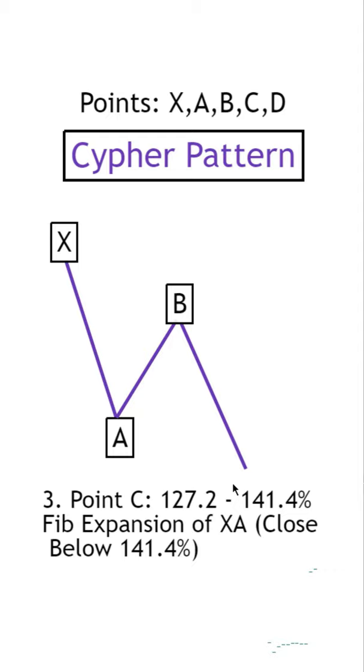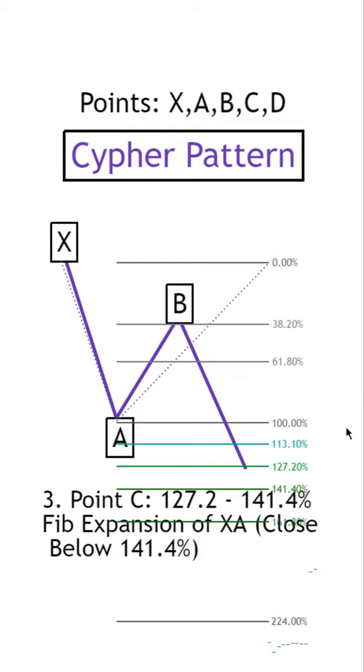Now that we've got B, let's move on to point C, and we'll get that with the Fibonacci Expansion Tool going from the move of X to A. Point C should land between 127.2 and 141.4 without closing past 141.4.